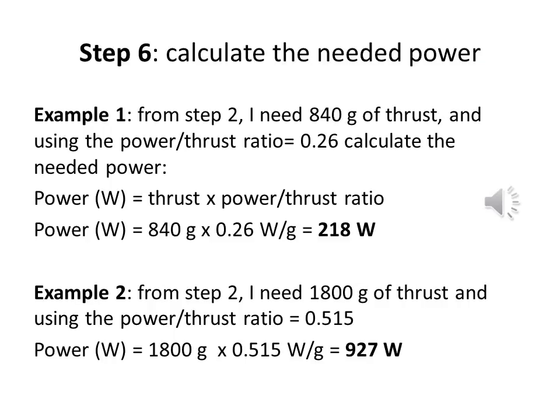Step 6: Calculate the needed power. Example 1 — Scale flight: from step 2, I need 840 grams of thrust; using the power-to-thrust ratio of 0.26, power equals 840 grams × 0.26 watts per gram = 218 watts. Example 2 — Jet: from step 2, I need 1,800 grams of thrust; using the power-to-thrust ratio of 0.515, power equals 1,800 grams × 0.515 watts per gram = 927 watts.